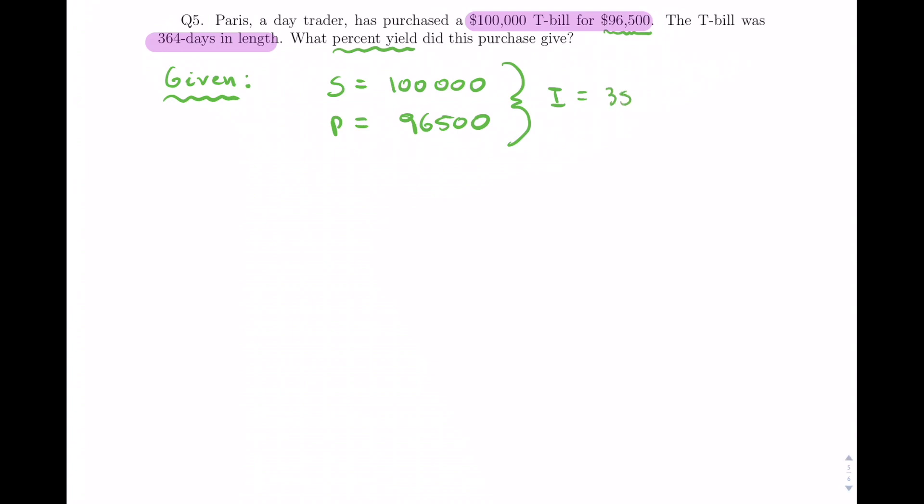So if you subtract the two, you'll get three and a half thousand, so that's going to make this a little bit easier. And we also have T, which is 364 days.